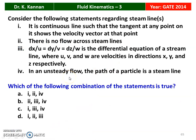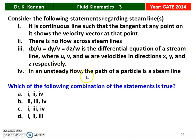The next question from the 2014 question paper: consider the following statements regarding streamlines. Statement 1 — it is a continuous line such that the tangent at any point shows the velocity vector at that point. Statement 2 — there is no flow across the streamline. Statement 3 — dX/U = dY/V = dZ/W is the differential equation of the streamline, where U, V, W are velocities in the X, Y, Z directions. Statement 4 — in an unsteady flow, the path of the particle is a streamline. Statements 1, 2, and 3 are true; statement 4 is not correct.